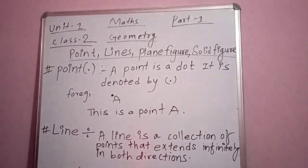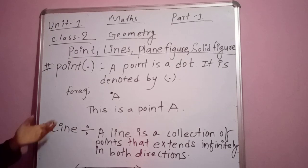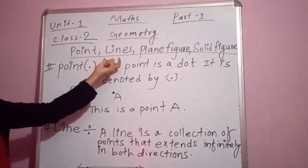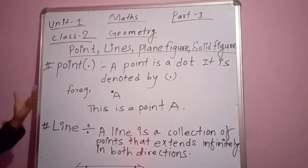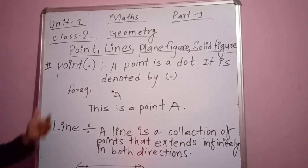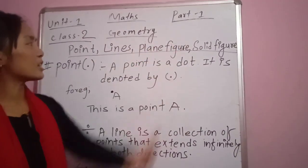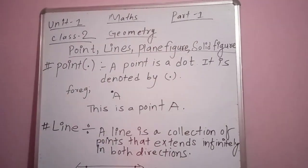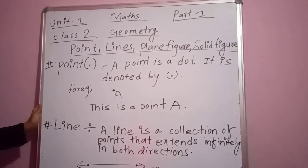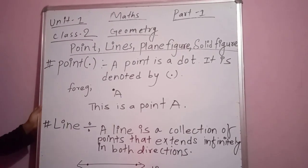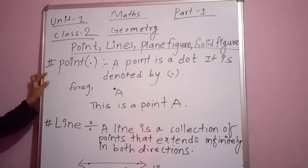The first one is a point. Point means, you can say in Nepali, 'Poblo.' After that, lines — line means 'dhargo' in Nepali. After that, we will learn about different plane figures and solid figures too. But the first topic I am going to introduce to you all is a point.